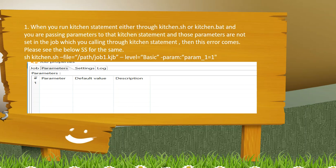The first scenario is when you run a kitchen statement either through a .sh file or .bat file and you are passing some parameter to it. For example, I am passing one parameter which is param_one with value assigned to one, but that parameter you have not set in the parent job as you can see in the screenshot, so you will get this error.